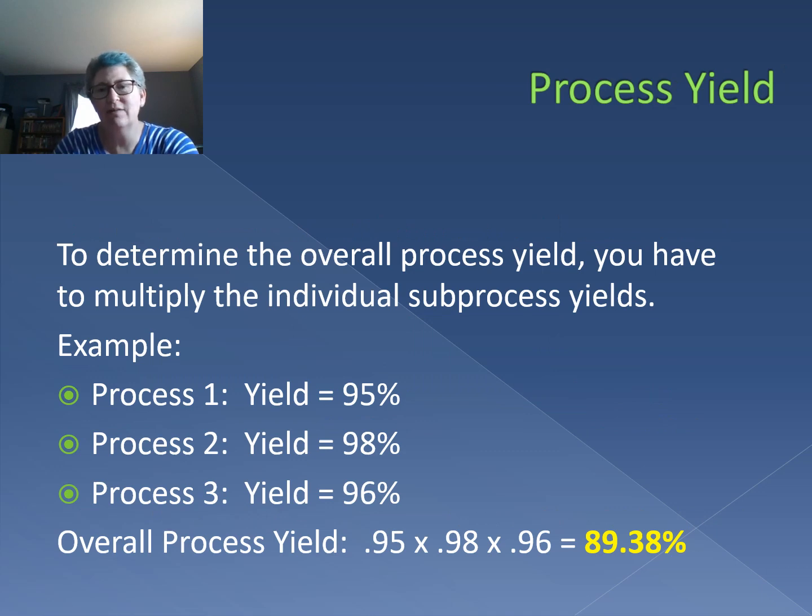To understand overall process yield, you're going to take every step or every sub process that you have in your overall process and look at the individual yield rates. Then you multiply them together to get your overall process yield. For example, in a three step process with a 95, 98 and 96% process yield respectively, we're going to end up with only an 89.38% yield. Each one of them is over 95%, but we're going to end up with a process yield of less than 90%.